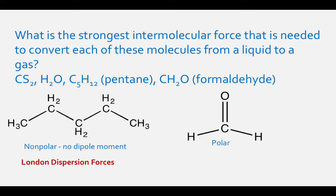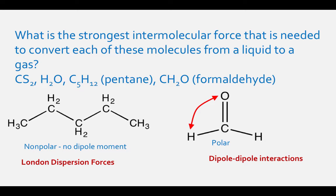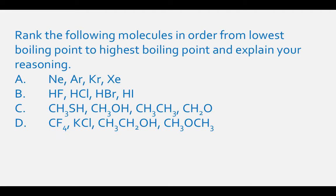CH₂O is a polar molecule with a structure where the carbon is singly bonded to the two hydrogens and doubly bonded to the oxygen. Since it is a polar molecule, it will exhibit dipole-dipole interactions. But the hydrogen atoms are not connected to the oxygen atom in the molecule, so it will not exhibit hydrogen bonding in converting from a liquid to a gas.